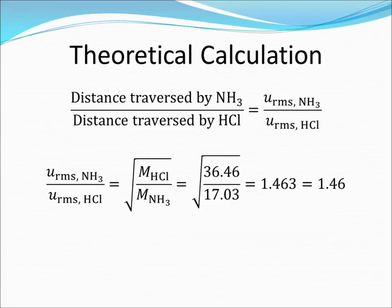We see the calculation here. So in theory, based upon the RMS speeds, the ratio of the distance traveled by the ammonia to the distance traveled by the hydrogen chloride should be 1.46.